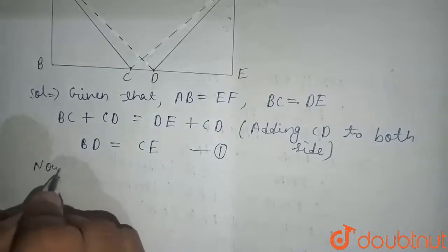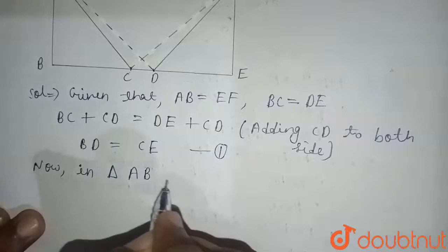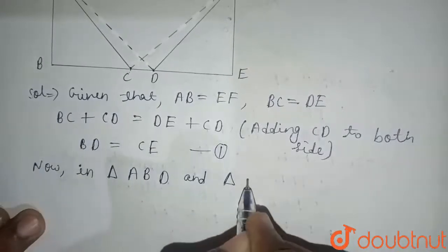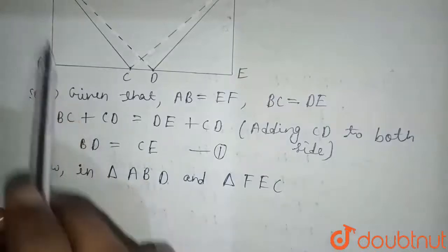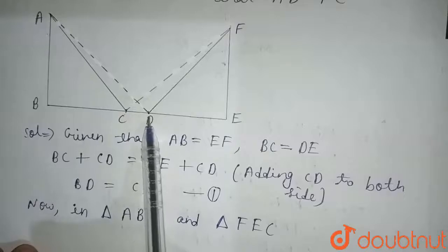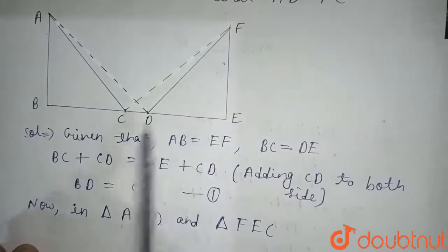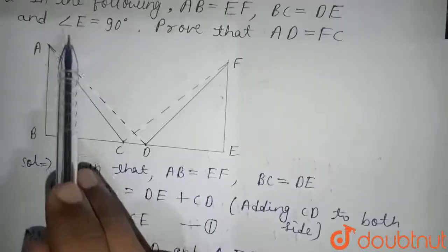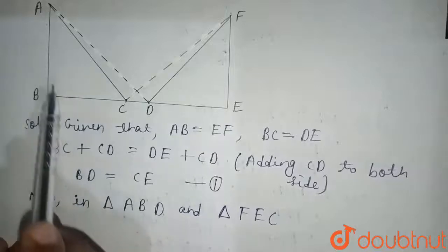Now, in triangle ABD and triangle FEC, that is triangle ABD, this triangle, and FEC, this triangle. Here we can see that in the question it is given that angle E equals 90 degrees.